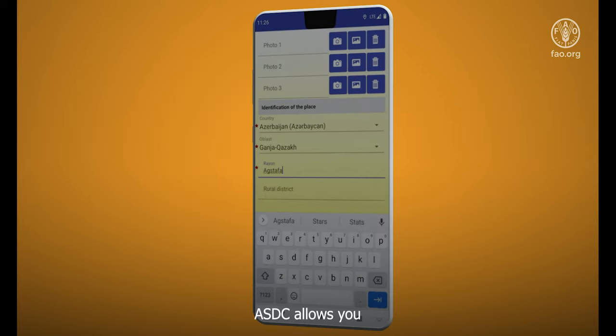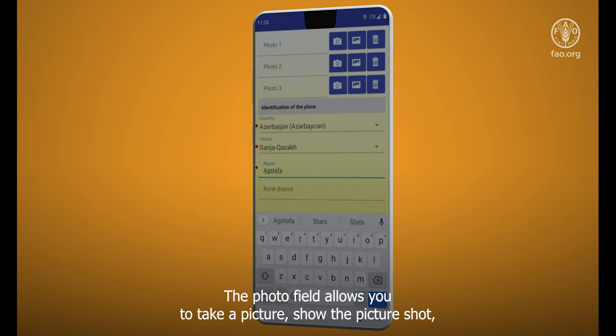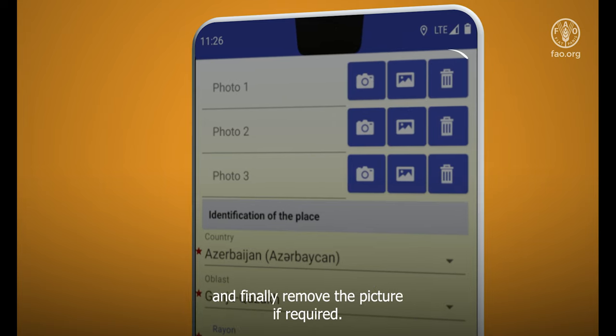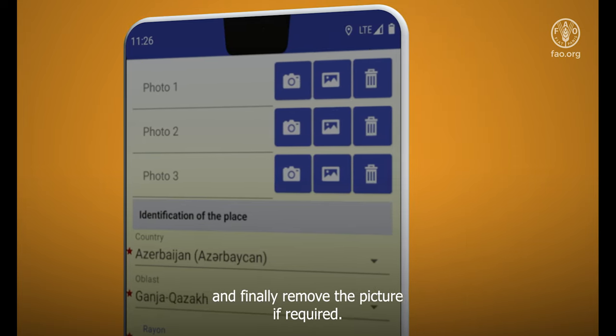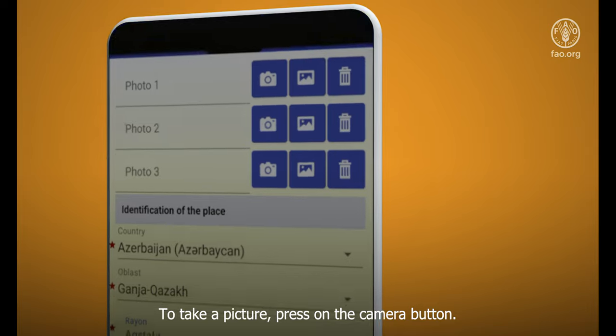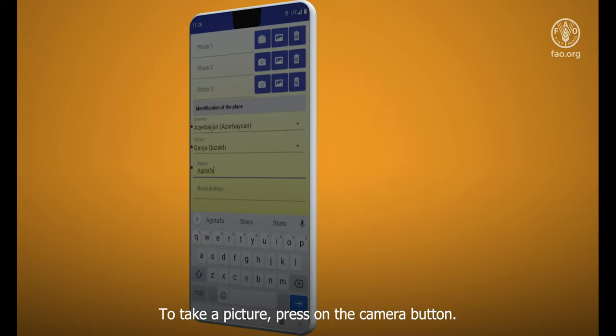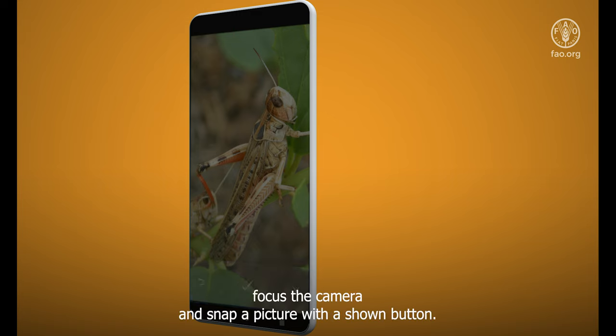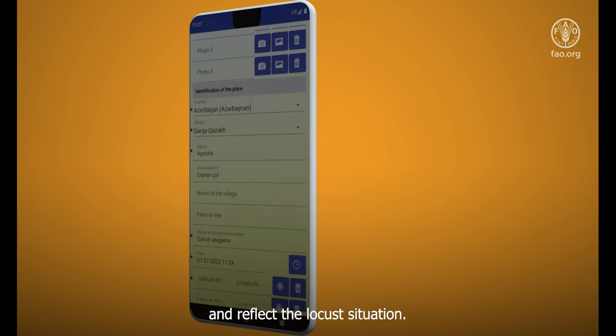ASDC allows you to save up to three pictures. The photo field allows you to take a picture, show the picture shot, and finally remove the picture if required. To take a picture, press on the camera button. You will be prompted with a photo screen. To take a picture, focus the camera and snap a picture with the shown button. Please note that photos must be informative and reflect the local situation.